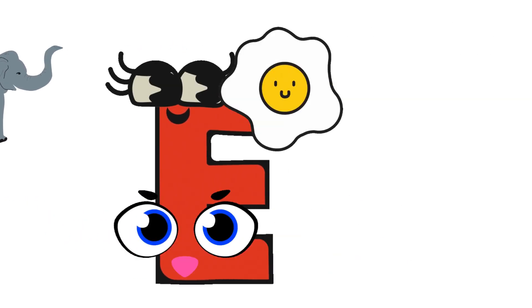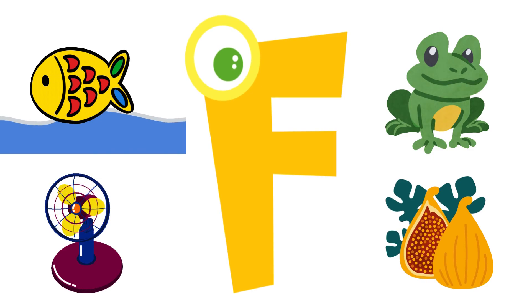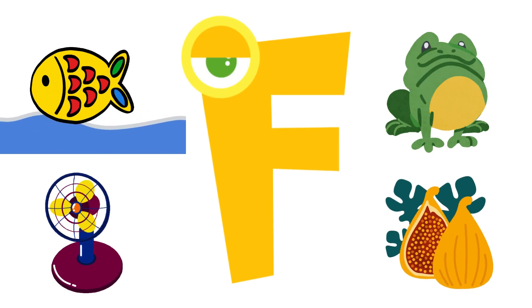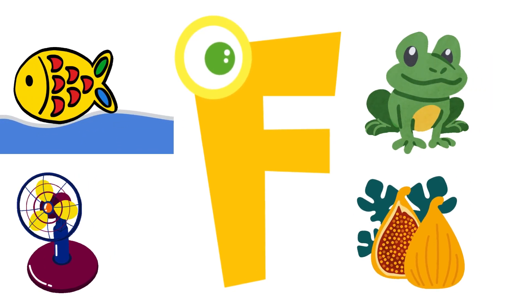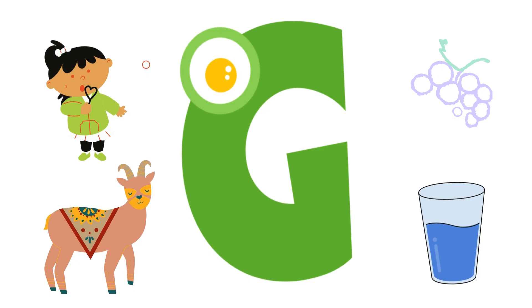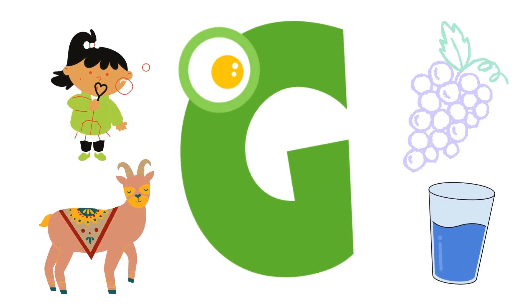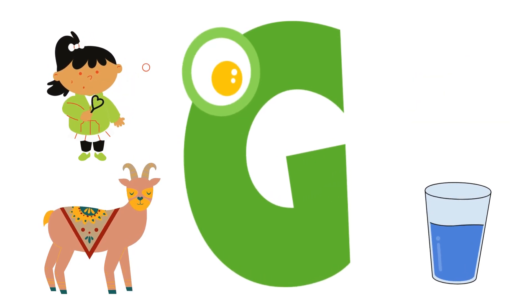F for fish, frog, fan, fig. G for gel, grapes, goat, glass.